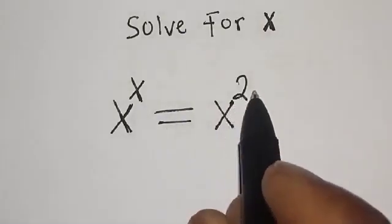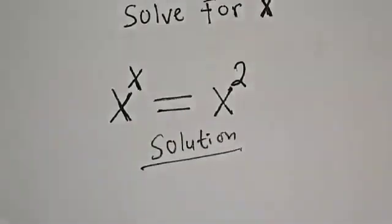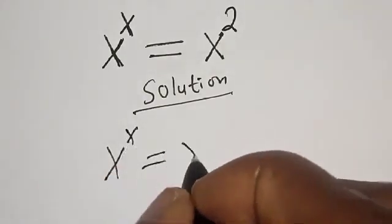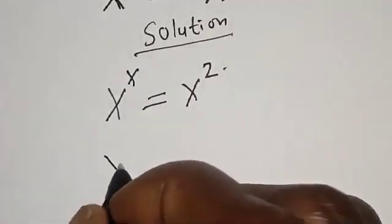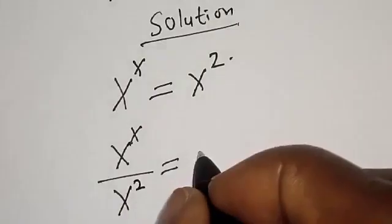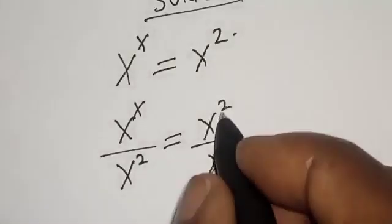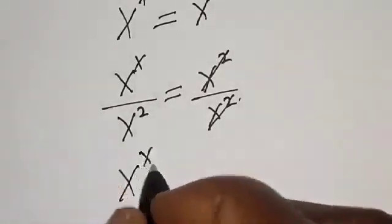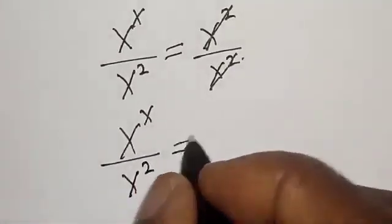Solution. We have the given equation s raised to power s is equal to s squared. Now let's divide both sides by s squared. We have s raised to power s divided by s squared is equal to s squared divided by s squared. This will cancel, giving us the left hand side as s raised to power s divided by s squared is equal to one.